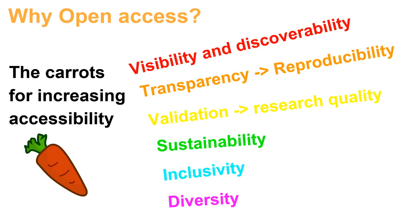Now that we know what open access is and isn't, it's important to think about why we would want to make our research open access. Some incentives for increasing the accessibility of our research are: making your work openly available makes it more readily visible and discoverable. Others can actually download and read it, not just the abstract. It has been shown that open access articles attract more attention from the scientific community and the media. Your work is also more transparent — others can then understand fully what you have done and reproduce your research using your data and analysis steps.